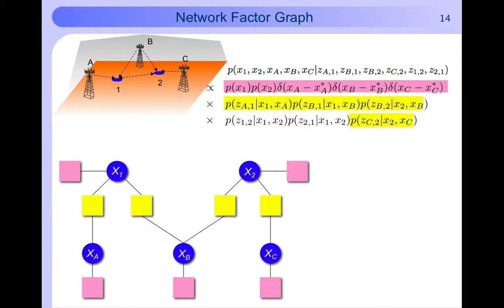Then the yellow vertices correspond to likelihood functions related to measurements between agents and anchors. The red and green vertex correspond to likelihood functions related to measurements between agents. Now that we have the factor graph we can execute the sum product algorithm.